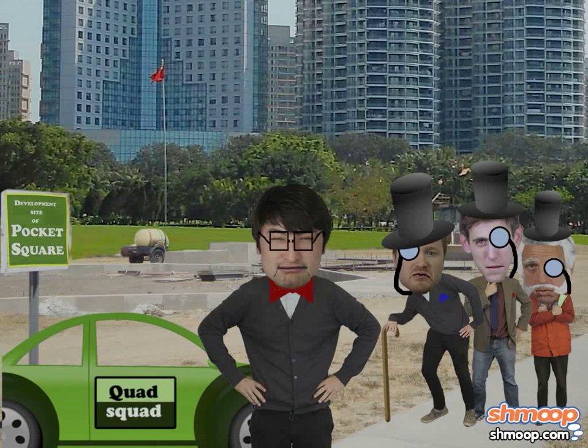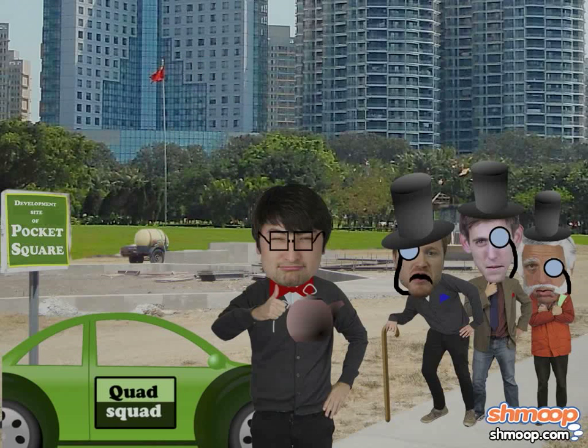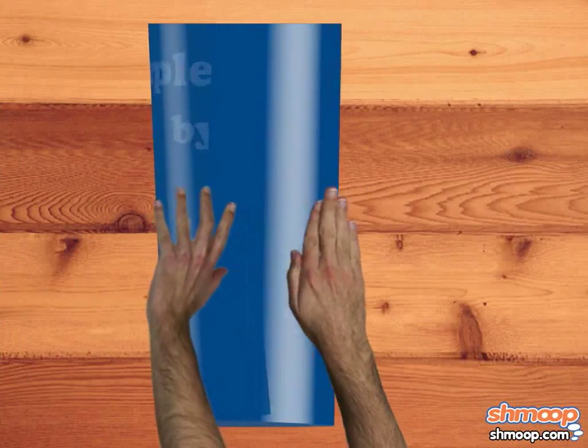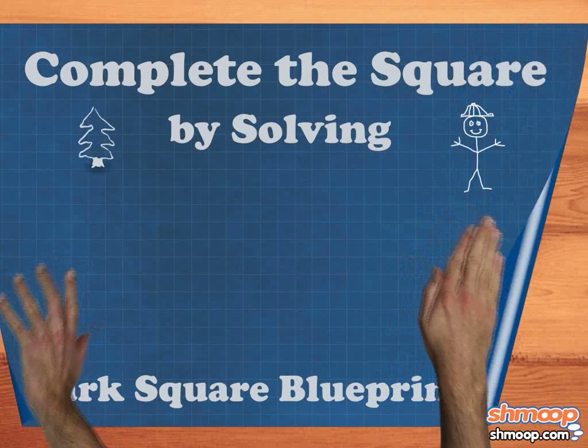Gentlemen, we'll have the square completed before tea time. In order for the Quad Squad to complete the square, they ask the hankies to first solve this problem.